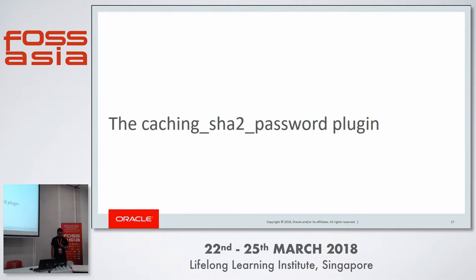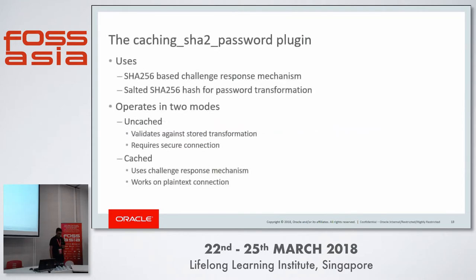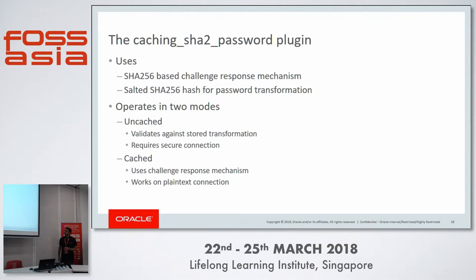In 8.0 we introduce the Caching SHA-2 Password plugin, a new authentication plugin. It uses a SHA-256 hash, which is much more secure than the SHA-1 hash currently used for MySQL native password. It uses a salted SHA-256 hash iterated 5,000 times when storing the transformation in the mysql.user table. The plugin operates in two modes: an uncached mode which requires the actual password to be sent over a secure connection, and a challenge-response mechanism that can work on plain text connections as well.